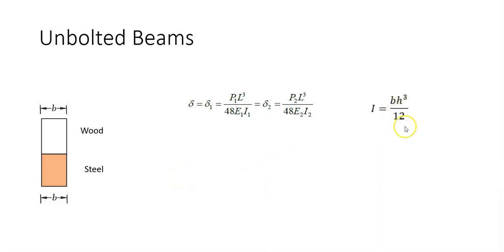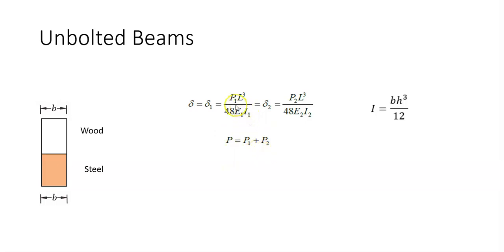Moment of inertia can be calculated using the relation BH³ over 12. We have B and height for both materials and can calculate moment of inertia. We also know that load is distributed between these two beams, so P1 plus P2 equals P. Using this equation, we can plug into the deflection equation and solve for P1 or P2, and finally arrive at this relation for the deflection of unbolted beams. This gives you the analytical deflection.